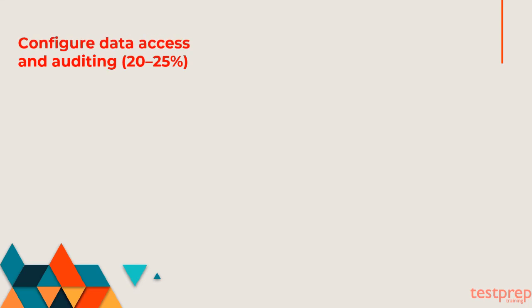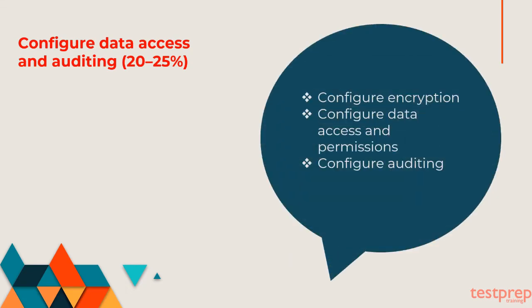First, configure data access and auditing, 20–25%. It contains three subtopics: 1. Configure encryption. 2. Configure data access and permissions. 3. Configure auditing.